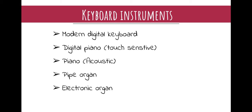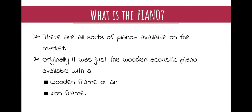In today's modern society we have the digital keyboard, the digital piano — which often has weighted keys and is touch sensitive — and the acoustic piano. The acoustic piano comes in basically two sorts: the upright piano, which tends to be wooden with a wooden or iron frame, or the grand piano. There's also the pipe organ seen in churches and the electronic organ often found in people's homes. On the market you can get a wooden acoustic piano with either a wooden frame or an iron frame.